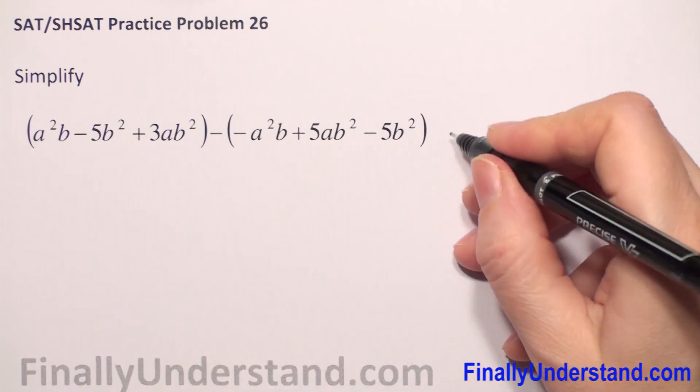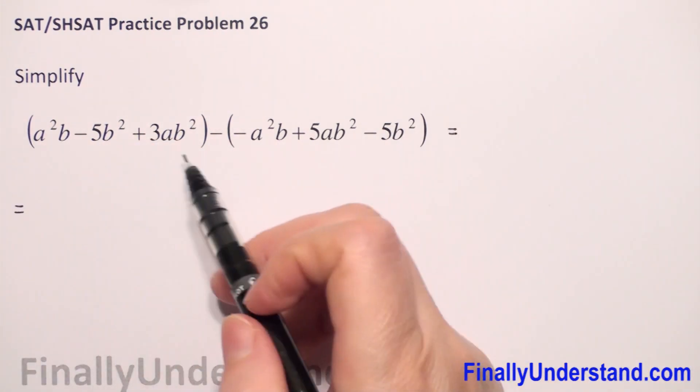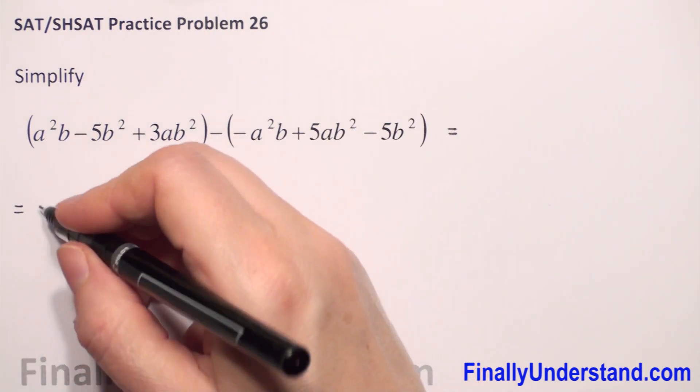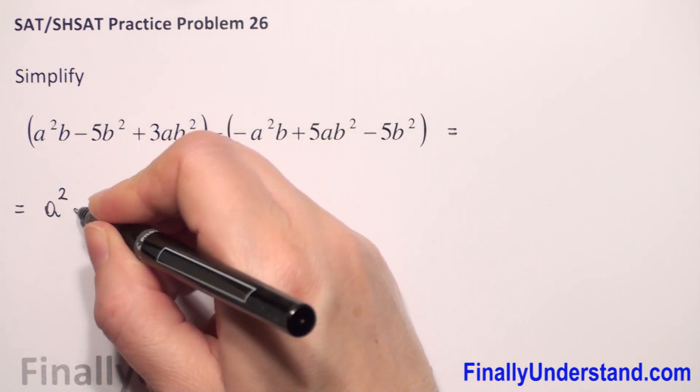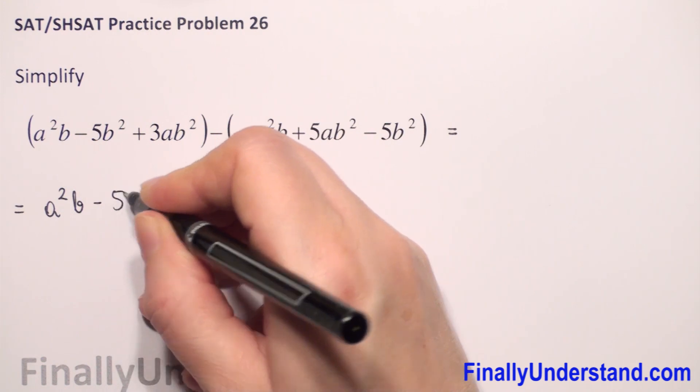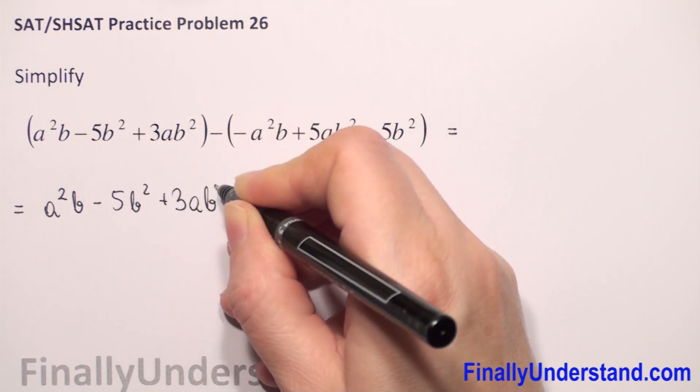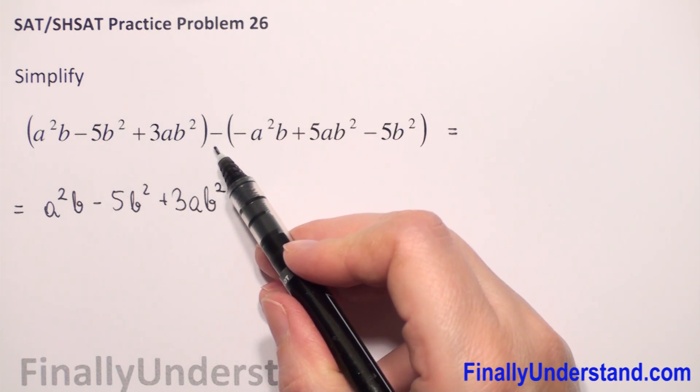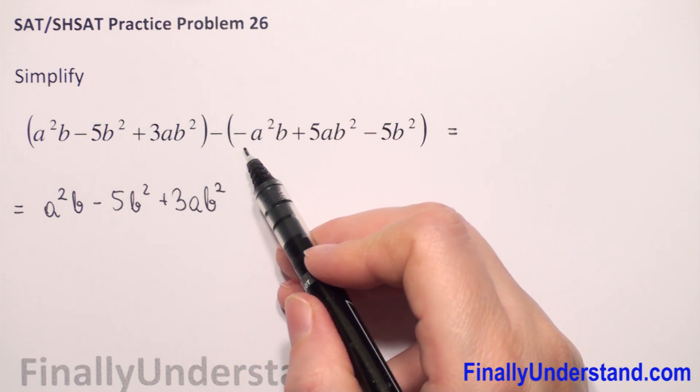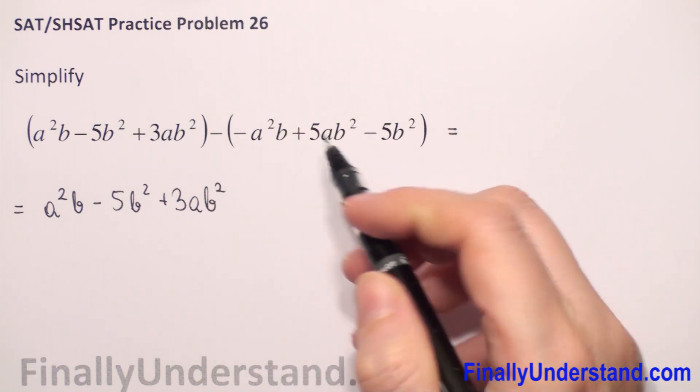In the first parentheses we cannot do anything. Every term is different so we have to just copy everything a²b minus 5b² plus 3ab². Because we have negative sign before the parentheses so we have to change the sign of every expression in parentheses.